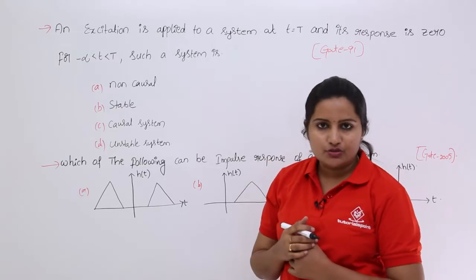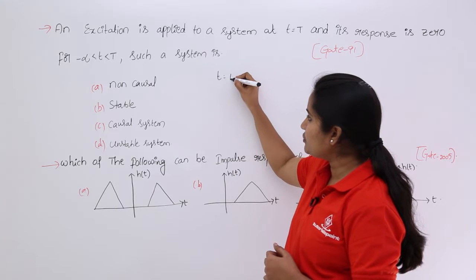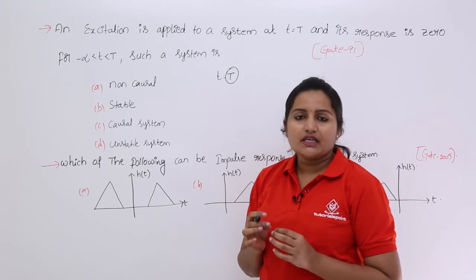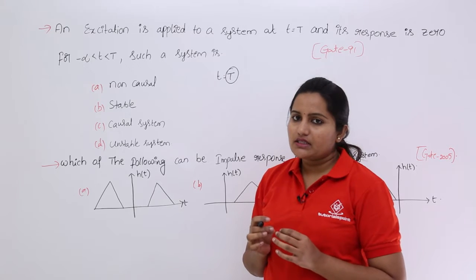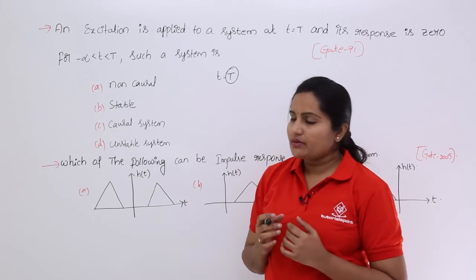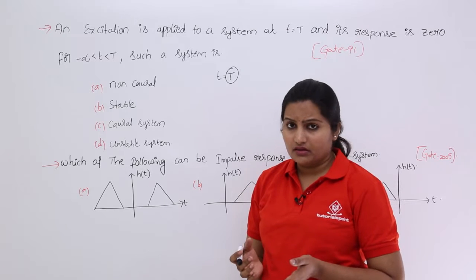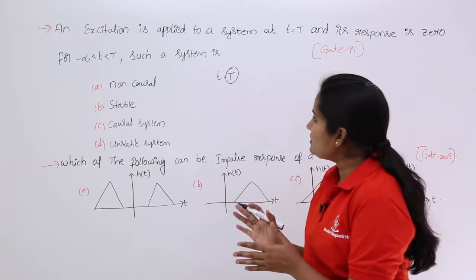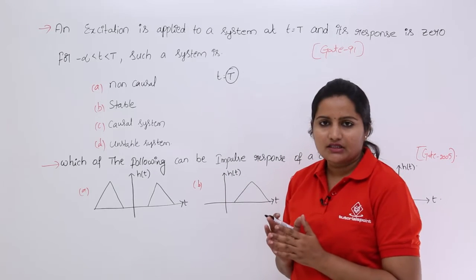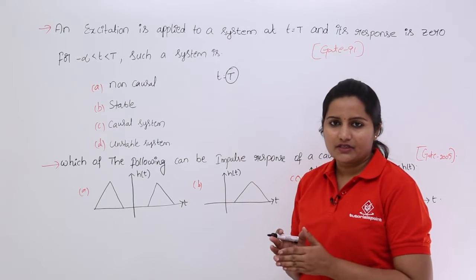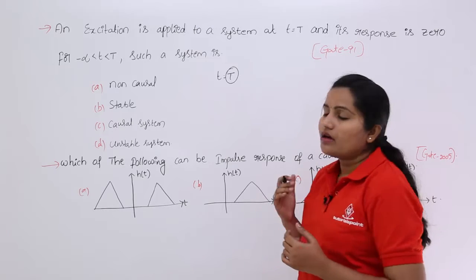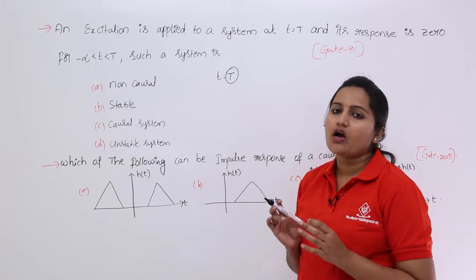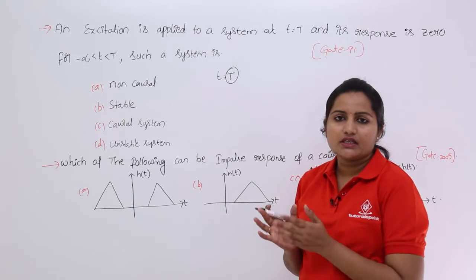For this time, this system is said to be causal, stable, non-causal, or unstable — we need to specify. By considering time alone we cannot justify the stability of a system. Stable system means for bounded input we need to get bounded output.